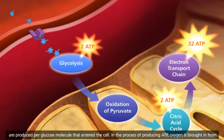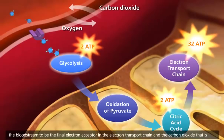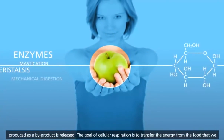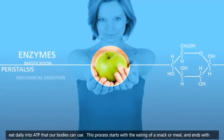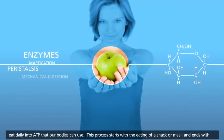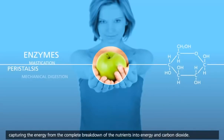In the process of producing ATP, oxygen is brought in from the bloodstream to be the final electron acceptor in the electron transport chain, and the carbon dioxide that is produced as a byproduct is released. The goal of cellular respiration is to transfer the energy from the food that we eat daily into ATP that our bodies can use. This process starts with the eating of a snack or meal and ends with capturing the energy from the complete breakdown of nutrients into energy and carbon dioxide.